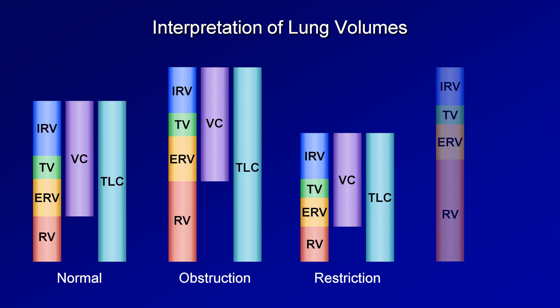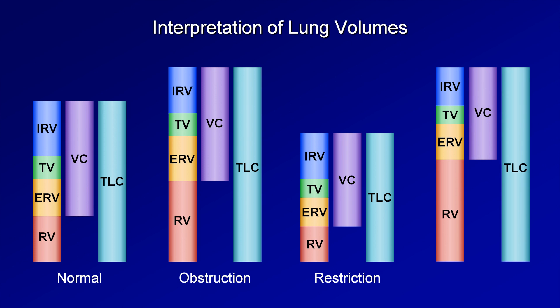There is also a potentially confusing scenario in which the residual volume is so increased above normal that it more or less crowds out the other lung volumes. Therefore, the vital capacity is reduced compared to normal even as the total lung capacity is increased compared to normal. This pattern is known as pseudo-restriction, because it will appear to be indicative of restrictive lung disease if only the lung volumes from spirometry are measured and examined. To make an accurate diagnosis that the patient actually has severe obstructive disease, one would need the complete lung volumes measured. While the flow-volume loop from conventional spirometry can demonstrate severe coving of the expiratory limb and thus obstruction, it may be impossible to differentiate the pseudo-restriction variant of obstruction from a mixed obstruction and restriction defect.